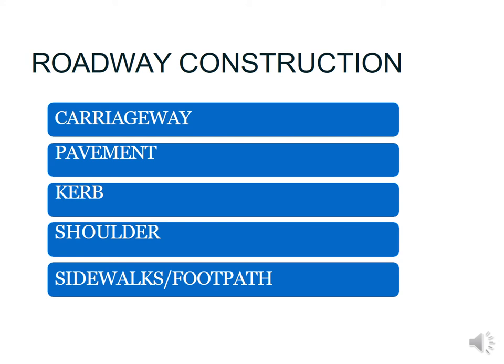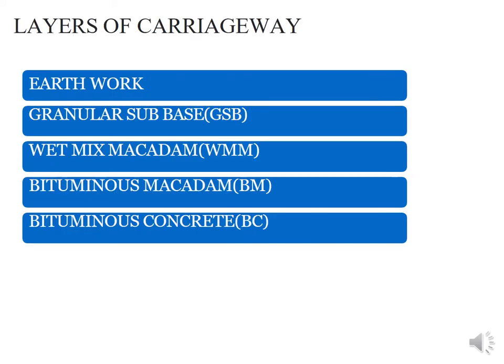Hello everyone, welcome to this video lecture. In this lecture we have to study roadway construction. In the last video lecture we covered right-of-way volume, classification of right-of-way, what type of equipment and materials are required for construction. Now we focus on roadway construction. The basic components or parts of the roadway are: carriageway, pavement, curb, shoulder, sidewalks, and footpath.